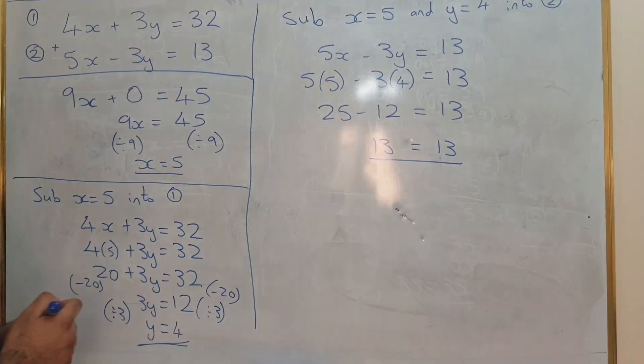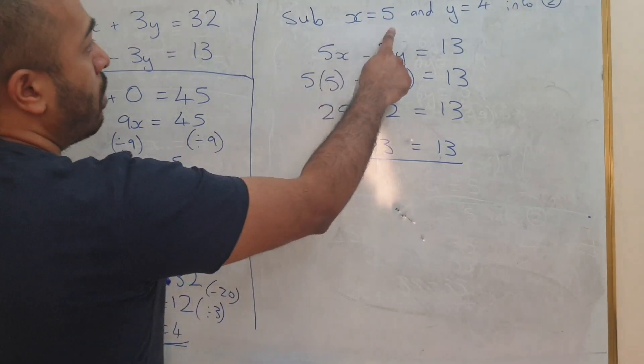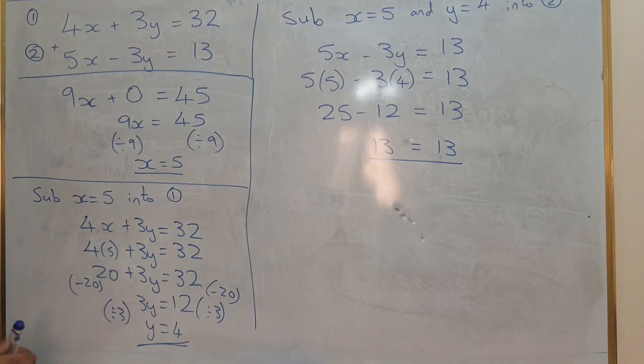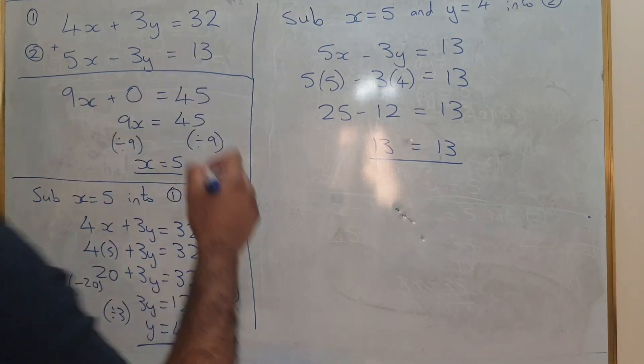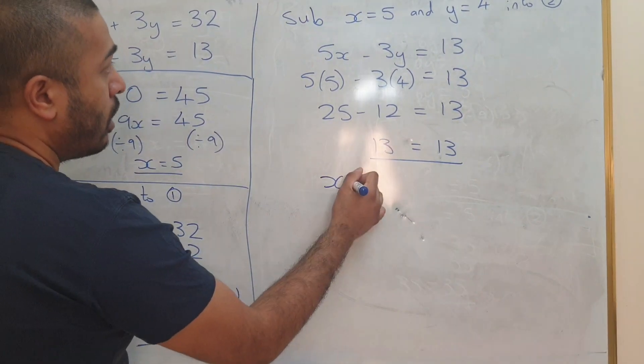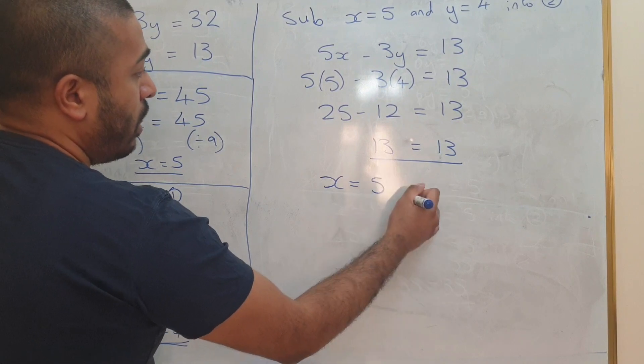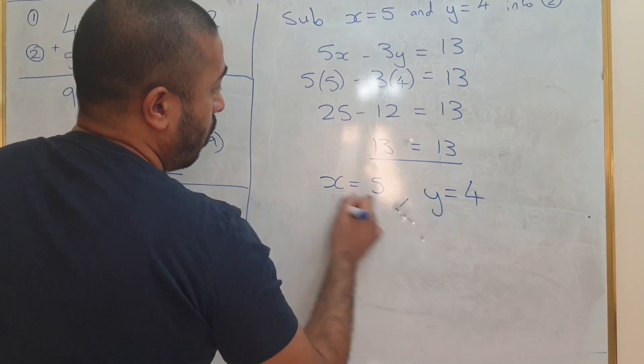Therefore, it balances. So your solutions are x equals 5 and y equals 4 with these two simultaneous equations. So we'll just write that here x equals 5, y equals 4.